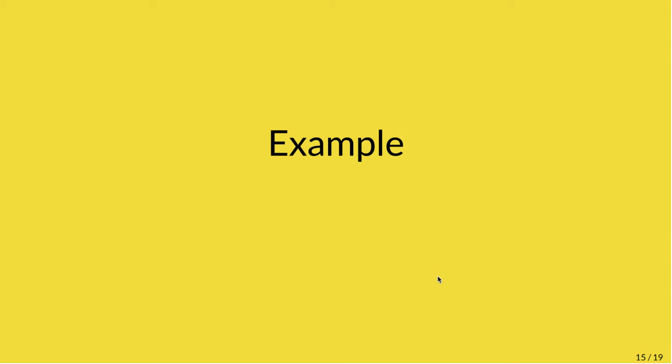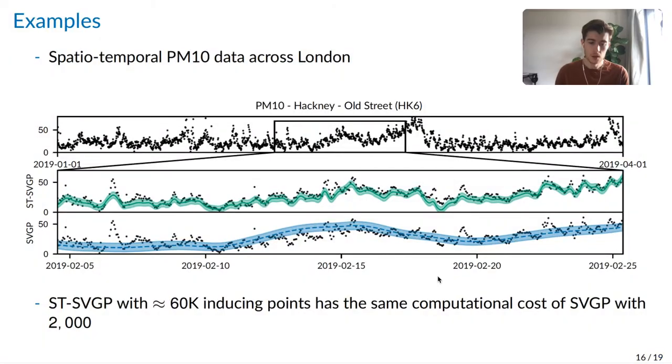I now showcase an experiment to demonstrate our proposed model, but please see the paper for many more details on everything I spoke about, and of course, more experiments. In this experiment, we are modeling four months' worth of PM data across London. So this is a spatio-temporal dataset, and we have two baselines. We have ST-SVGP, which is our proposed model in green, and we have the standard SVGP plotted in blue. To make this experiment fair, we choose the parameters of both models such that they run with the same wall clock time.